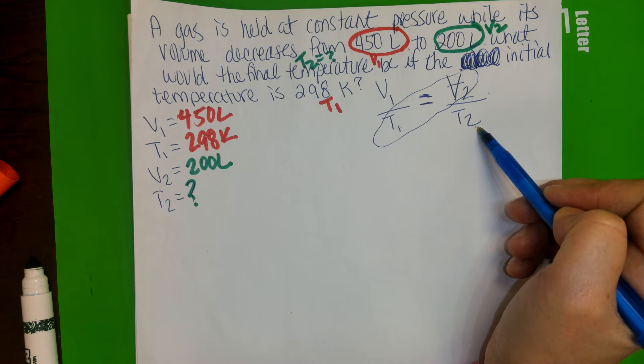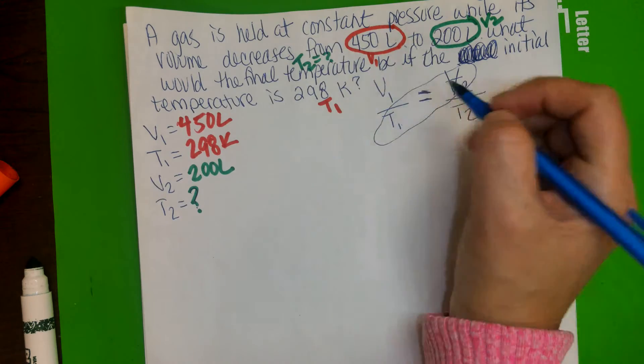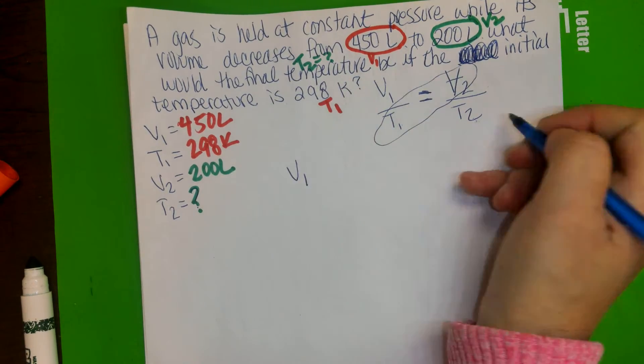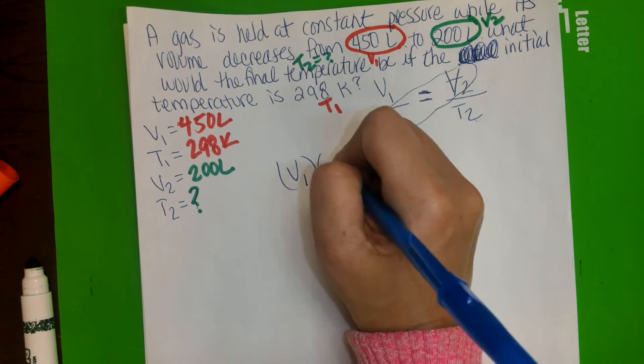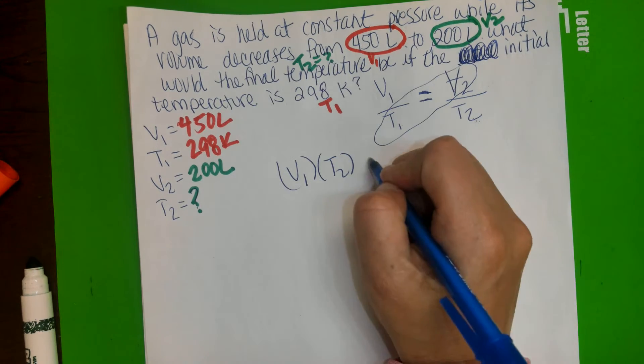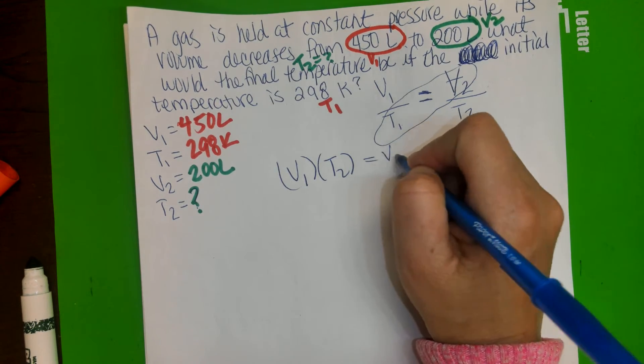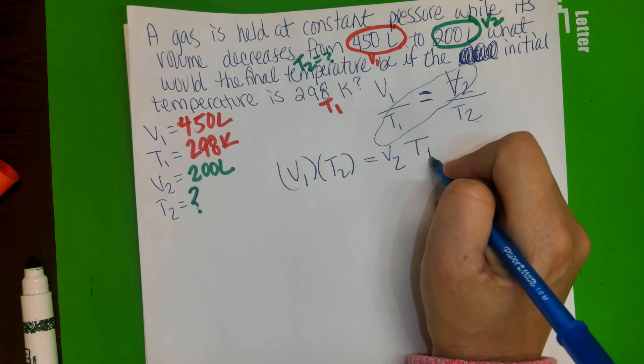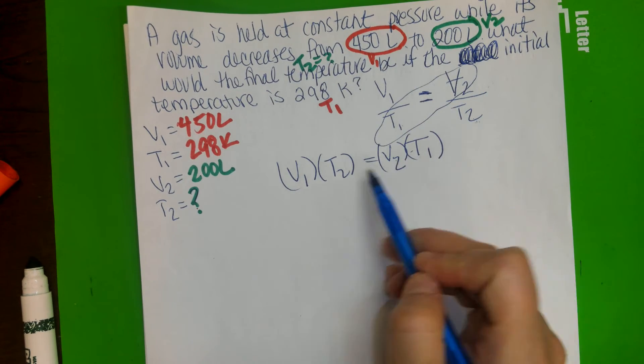We start by cross-multiplying each one. It will be V1 times, and I'm going to put parenthesis instead of multiplication, it's the same thing, and that equals to V2 and T1. Don't forget your parenthesis so you can know that you're multiplying.